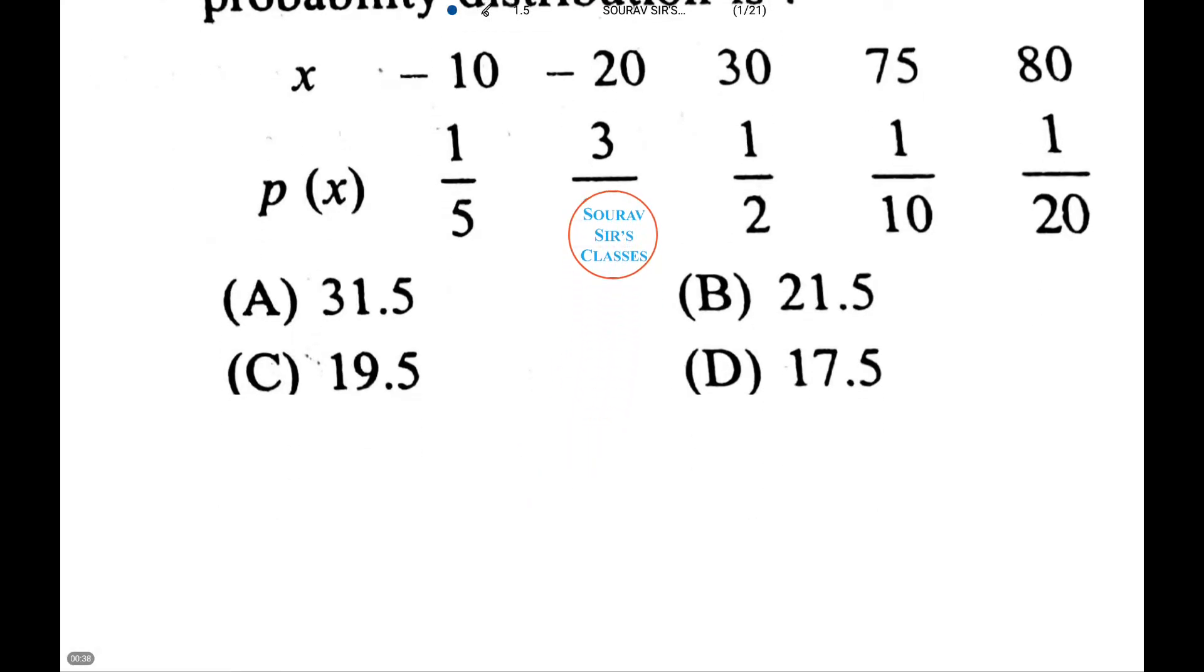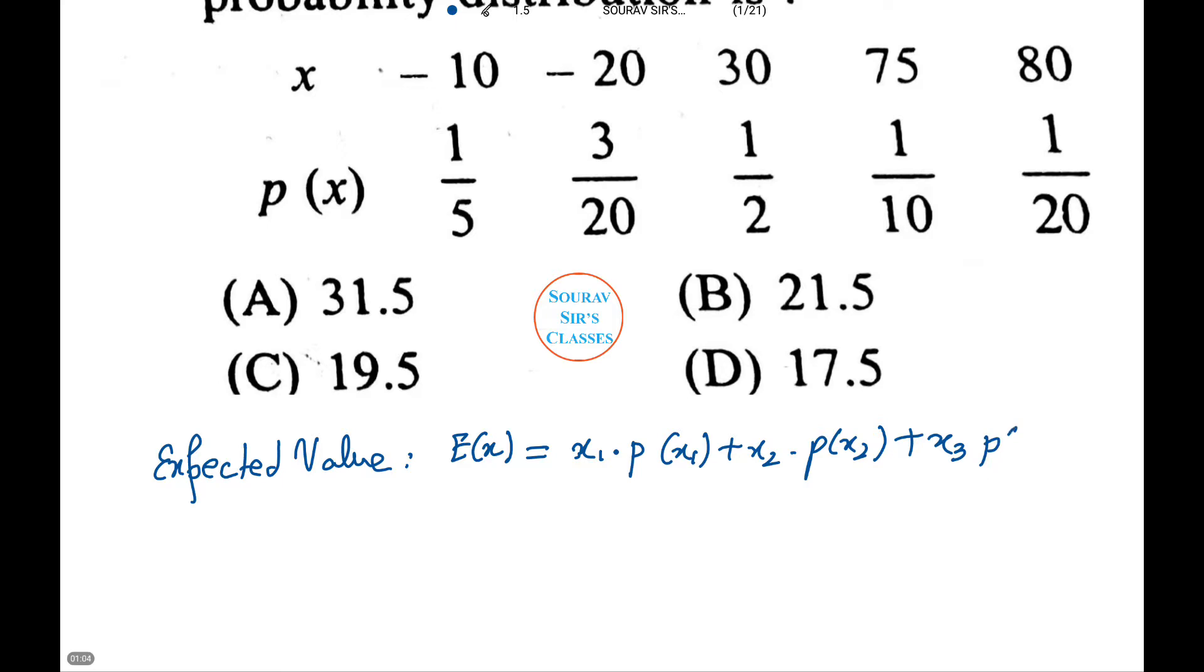Let's see how to do this. Expected value is written as expectation of x equals x1 times probability of x1 plus x2 into probability of x2 plus x3 into probability of x3 plus x4 into probability of x4 plus x5 into probability of x5.